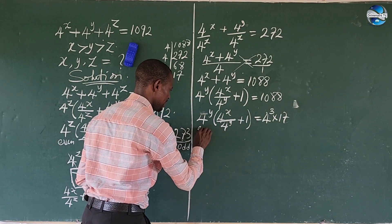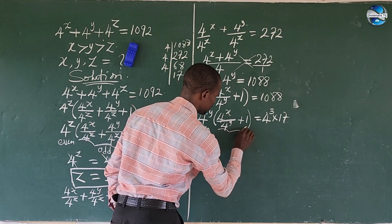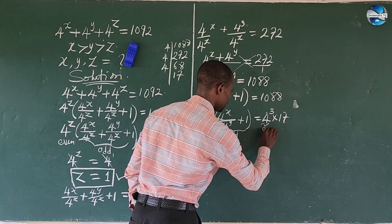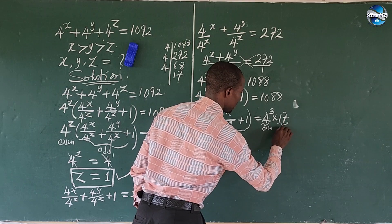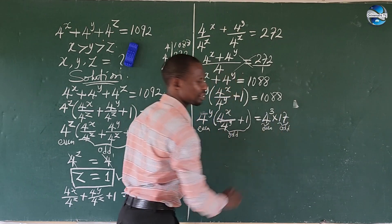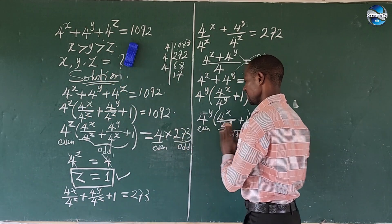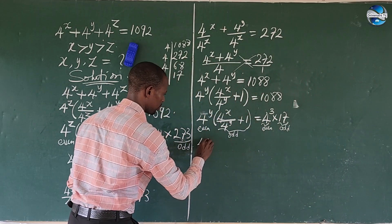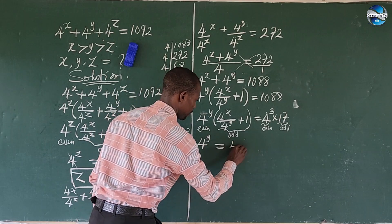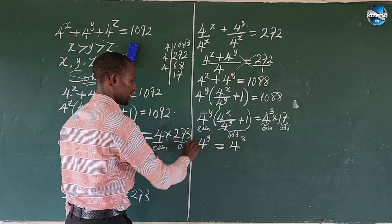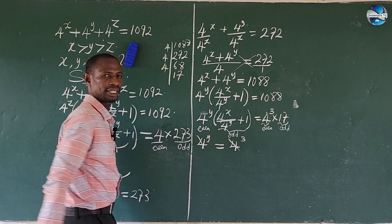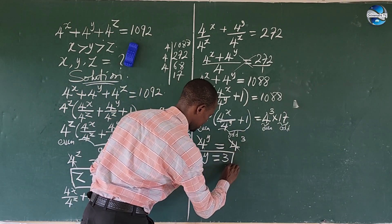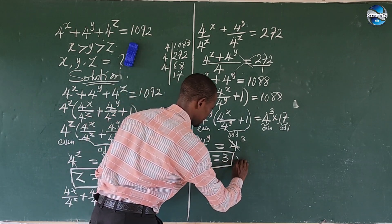So here we now have our even part and our odd part on the left, and even times odd on the right. Comparing even to even and odd to odd, we get 4 to the power of y equals 4 to the power of 3. Since the bases are the same and we have an equality sign, y is equal to 3.